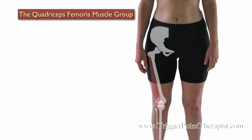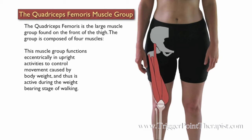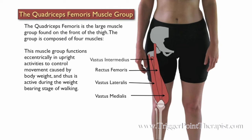The quadriceps femoris muscle group. The quadriceps femoris is the large muscle group found on the front of the thigh. The group is composed of four muscles: the rectus femoris, the vastus lateralis, the vastus medialis, and the vastus intermedius. This muscle group functions eccentrically in upright activities to control movement caused by body weight, and thus is active during the weight bearing stage of walking.